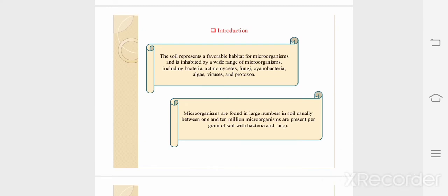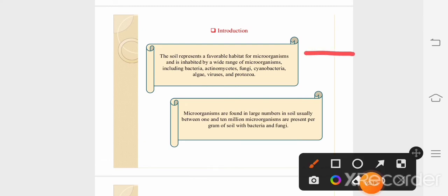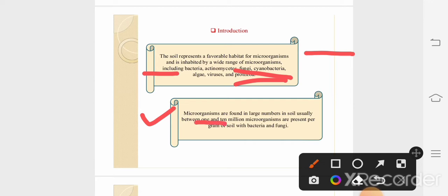The soil represents a favorable habitat for microorganisms. It includes bacteria, actinomycetes, fungus, cyanobacteria, virus, protozoa, and other microorganisms. It is known that microorganisms are found in large numbers in soil — usually between 1 to 10 million microorganisms per gram of soil, including bacteria, fungus, and other microorganisms.